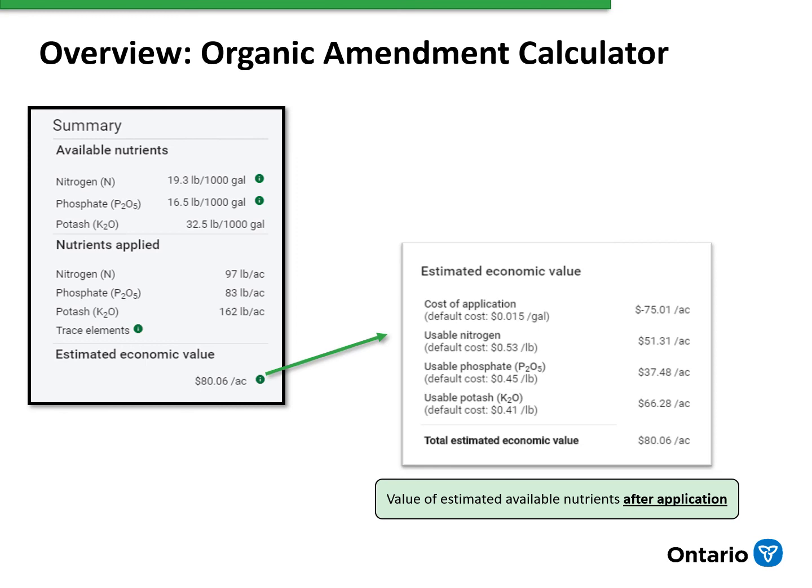When the user has entered all the information and tried different scenarios, there is an option to summarize that information in the report tab. There are options to print the information or it can be saved as a PDF for record keeping purposes.